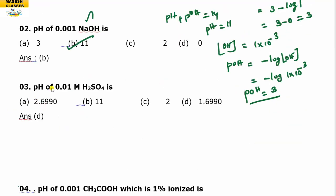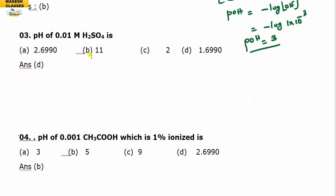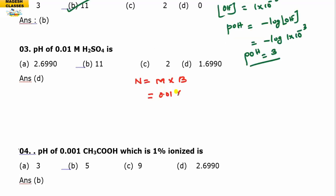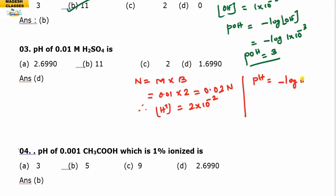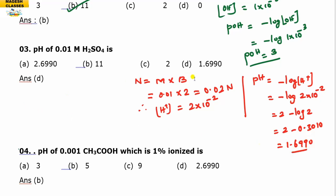Next: the pH of 0.01 M sulfuric acid. The concentration is given in molarity, so we must convert to normality. Normality = Molarity × n-factor. For H₂SO₄, the n-factor is 2, so Normality = 0.01 × 2 = 0.02 N. Therefore H⁺ concentration = 2×10⁻². pH = −log(2×10⁻²) = 2 − log 2 = 2 − 0.3010 = 1.6990. Your answer is D.